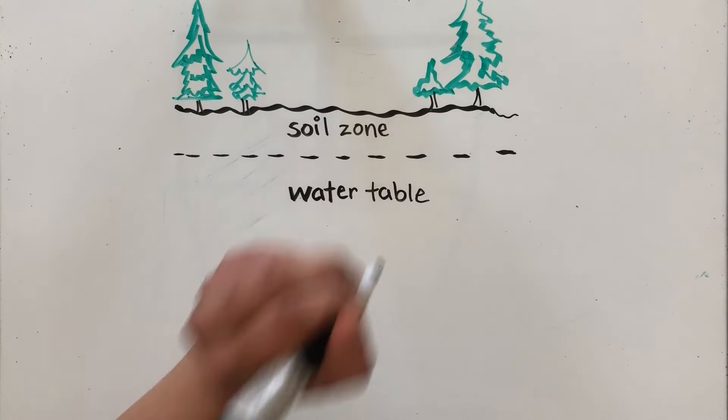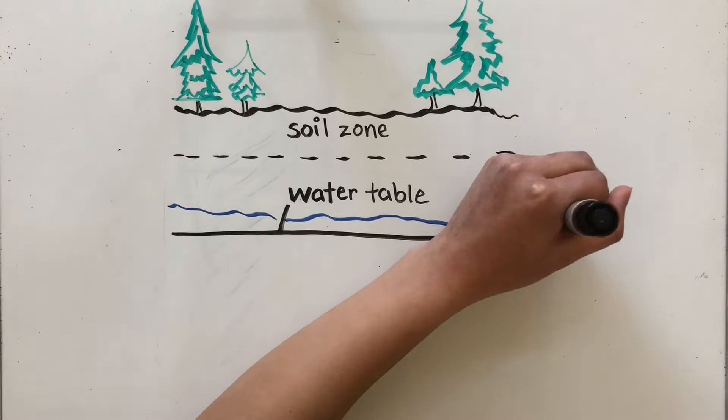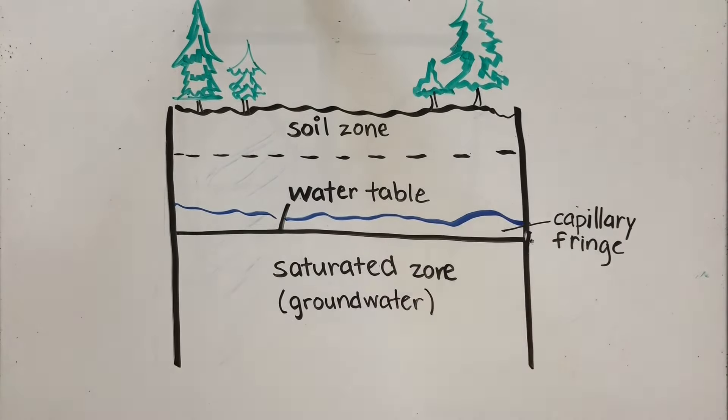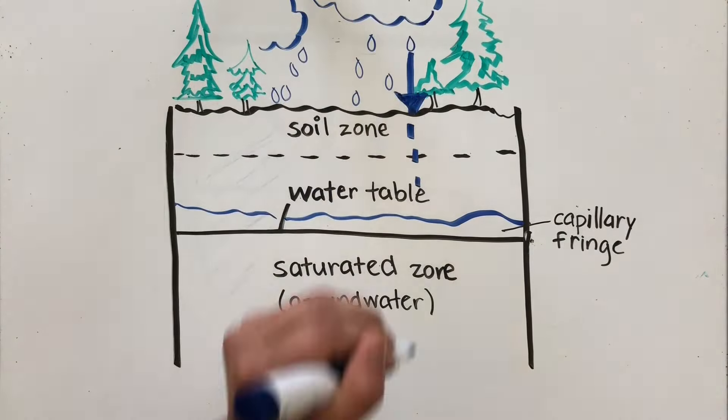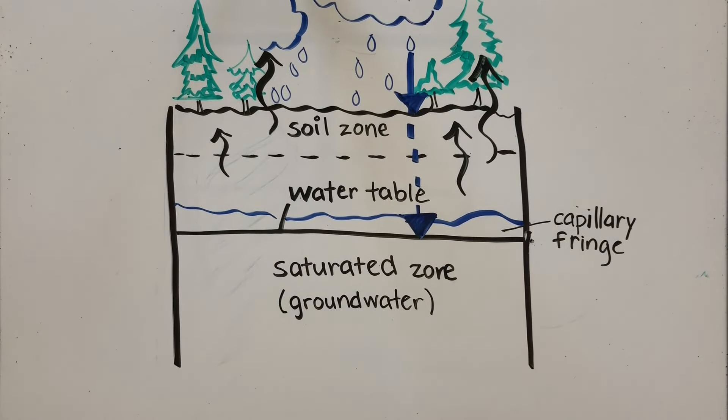The groundwater moves through the soil zone, or Earth's surface, where both oxygen and water are found in the soil, down through the capillary fringe, which is above the water table. The water table is the boundary between the soil and groundwater area, where only water fills the space between rocks.